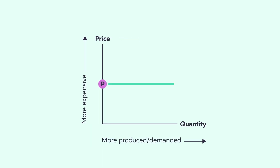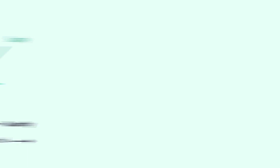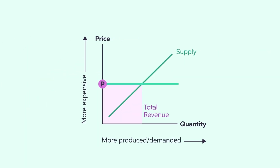In a competitive economy, the supply curve usually slopes upwards. Firms have to choose what production costs to include when they determine how much output to eventually produce. The two big concepts here are marginal cost and total average cost. Let's go over each of them individually.